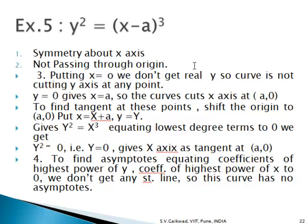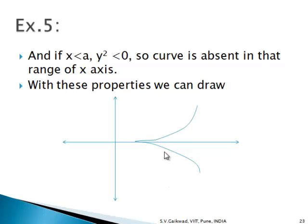Fifth example (b = c): y² = (x − a)³. Symmetric about the x-axis, not passing through origin. Putting x = 0 gives no real y; putting y = 0 gives x = a, so the curve cuts the x-axis only at (a, 0). Shifting the origin to (a, 0), the equation becomes y² = x³. The lowest degree term is y² = 0, so y = 0 (the x-axis) is the tangent at (a, 0). There are no asymptotes. The curve is absent for x < a and present for x > a. The x-axis tangent makes the point a cusp, and the curve goes to infinity. This curve is called a cubical parabola.